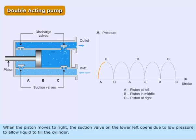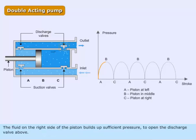When the piston moves to the right, the suction valve on the lower left opens due to low pressure to allow liquid to fill the cylinder. The fluid on the right side of the piston builds up sufficient pressure to open the discharge valve above.